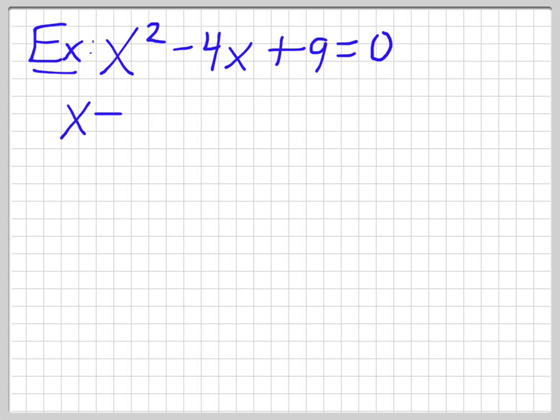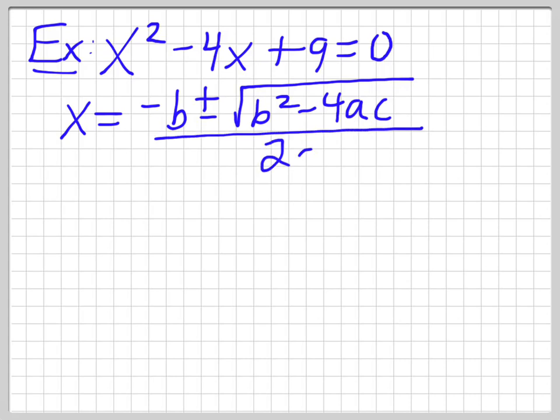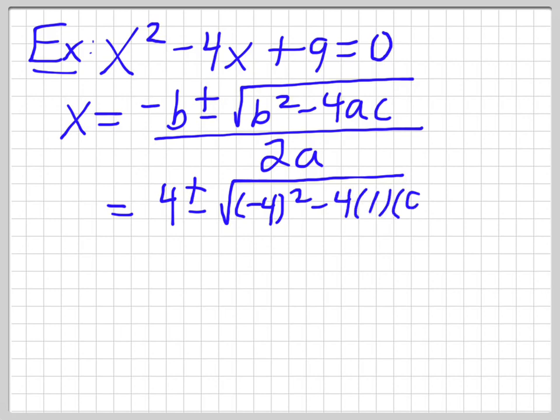So x is equal to negative b plus or minus square root b squared minus 4ac all divided by 2a. So negative, negative b is 4 plus or minus square root. Negative 4 squared minus 4a is 1, c is 9, all divided by 2.